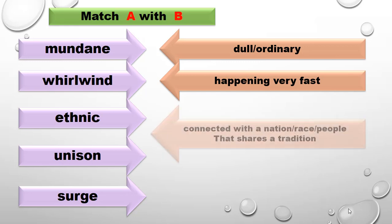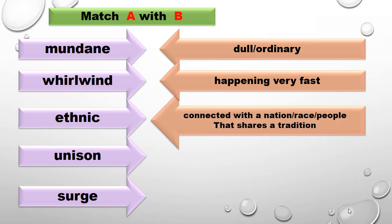The third word is 'ethnic.' Ethnic means connected with a nation, race, or people that shares a tradition — that means connected to a particular nation, race, or particular people.